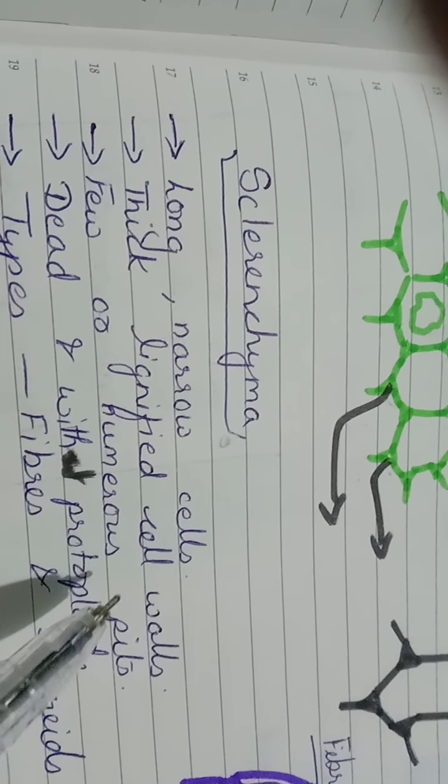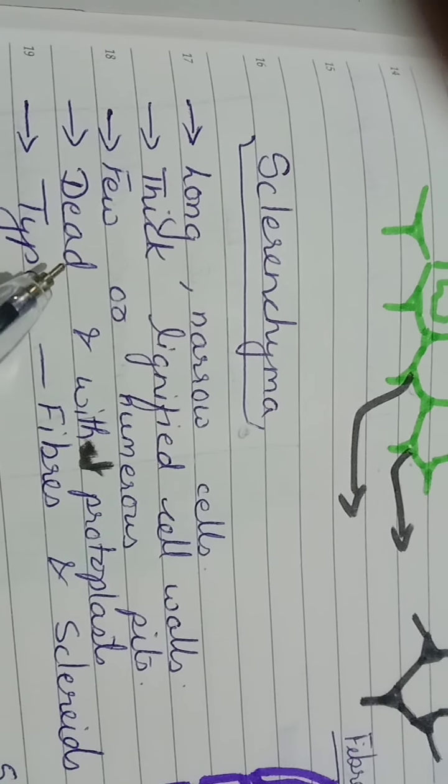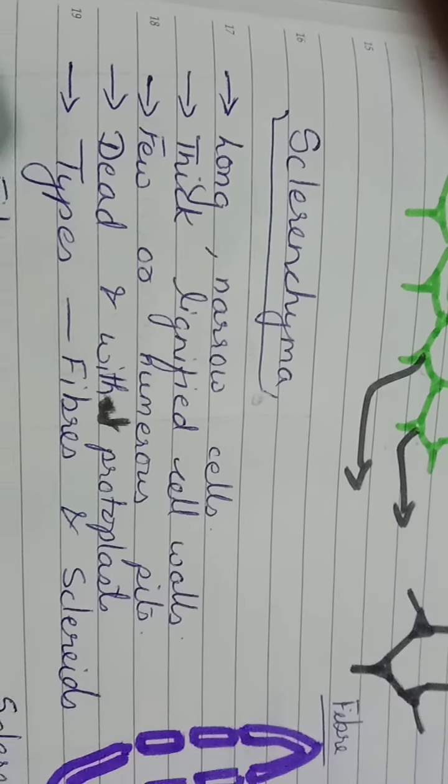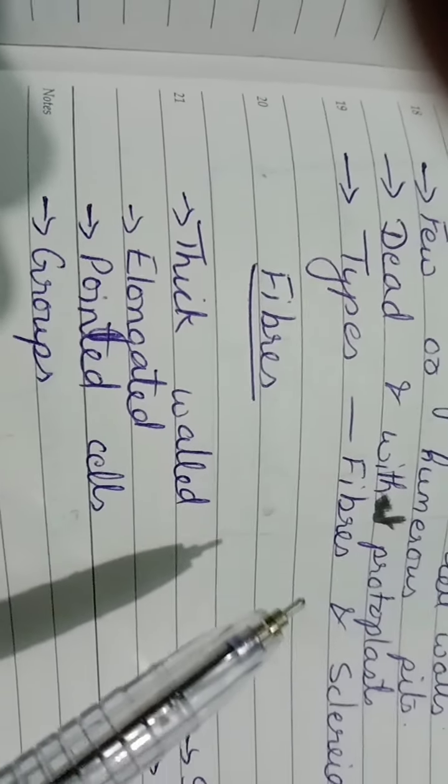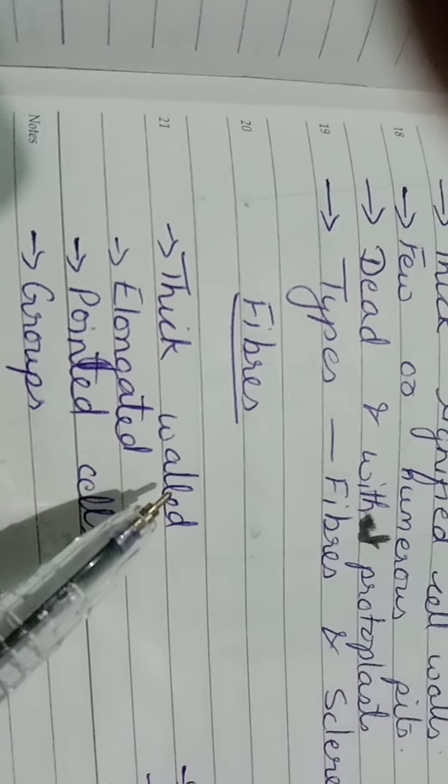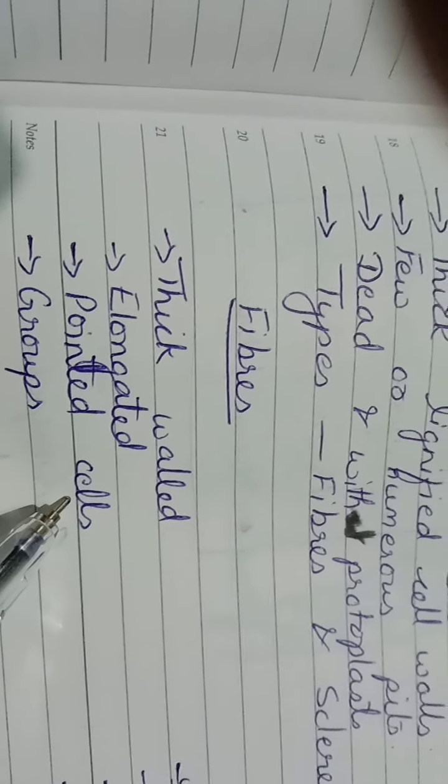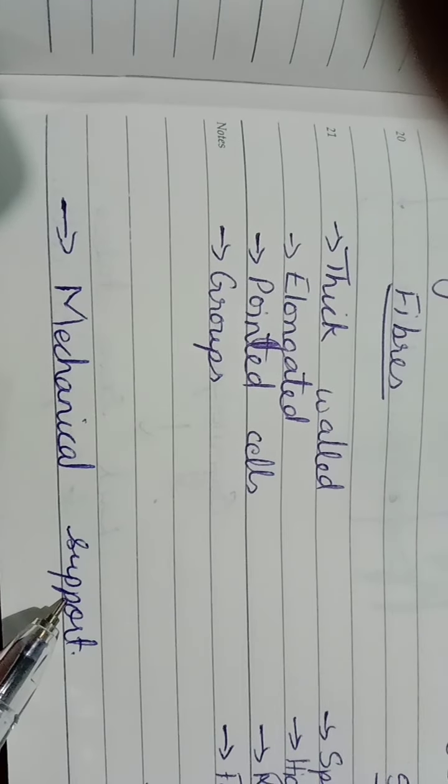There are two types of sclerenchyma: fibers and sclereids. Fibers are thick-walled, elongated, having pointed cells and present in groups. Fibers give the plant mechanical support.